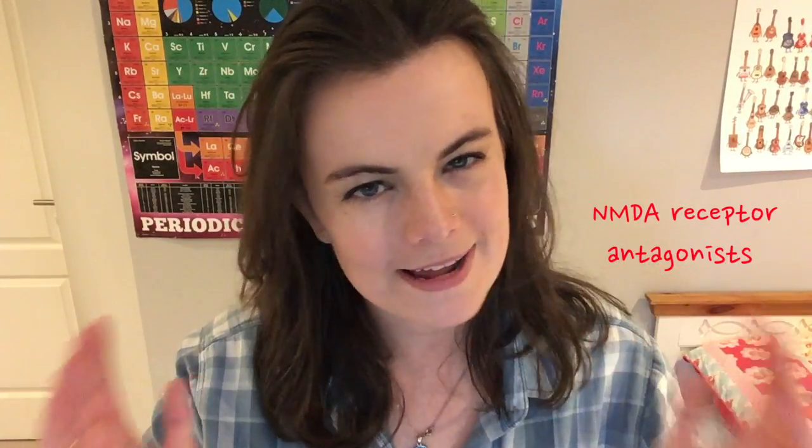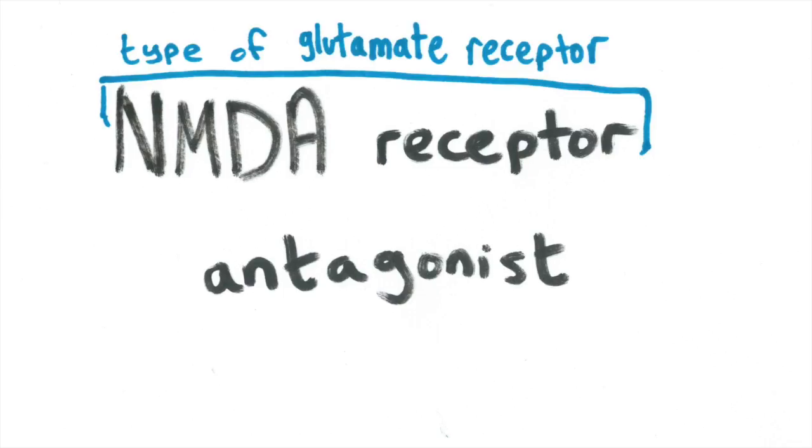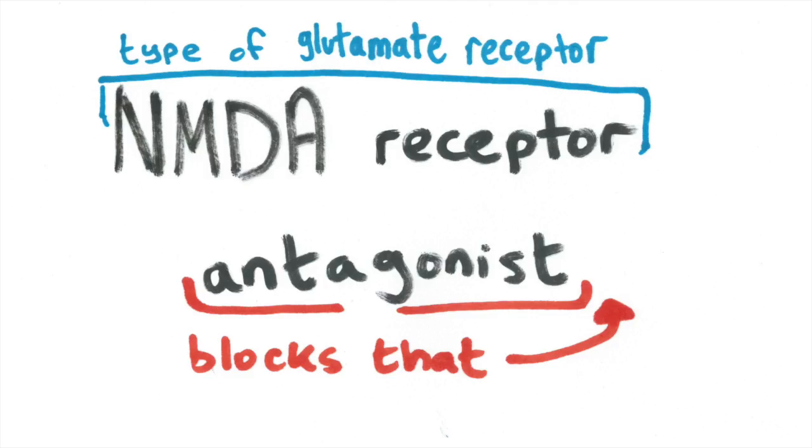Another slightly less common but still current treatment approaches from the glutamate angle. These drugs are known as NMDA receptor antagonists. NMDA receptors are a specific type of glutamate receptor — they're activated by glutamate, or in the case of dangerous excitotoxicity, over-activated by glutamate. An antagonist opposes something else — a receptor antagonist blocks the action of a specific type of receptor. So while excessive glutamate is making neurons excited to the point of damaging themselves, an NMDA receptor antagonist stops that excitement by blocking the receptor. There are also studies looking into anti-inflammatory drugs and anti-amyloid drugs to try and stop amyloid from over-aggregating.